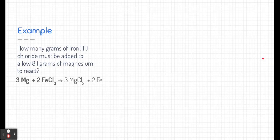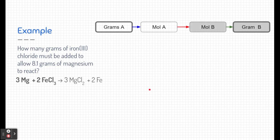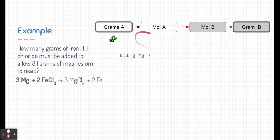Here's our example problem: How many grams of iron chloride must be added to allow 8.1 grams of magnesium to react? This is a stoichiometry problem because we're comparing two substances in a chemical reaction — specifically going from grams of one substance A to grams of a different substance B. We have grams of magnesium and we want to figure out how many grams of iron chloride we need to react with it.